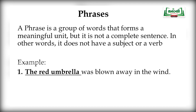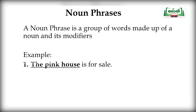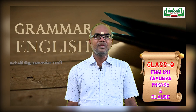A noun phrase is a group of words made up of a noun and its modifiers. Example: 'The pink house is for sale.' Here, 'house' is the noun, and 'pink' is the modifier that expresses something more — the house is pink in color. So 'the pink house' is the example of a noun phrase.